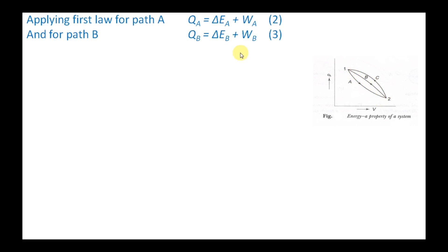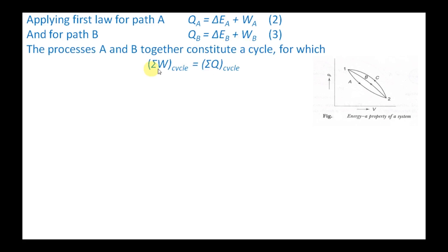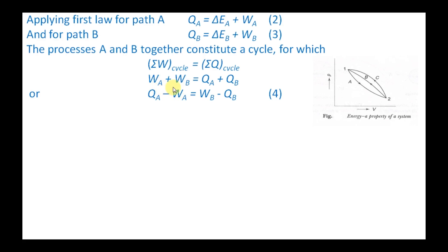Paths A and B together constitute a cycle. For a cyclic process, the summation of work transfer equals the summation of heat transfer: W_A + W_B = Q_A + Q_B. Rearranging this equation, we get Q_A − W_A on the left side and W_B − Q_B on the right side.